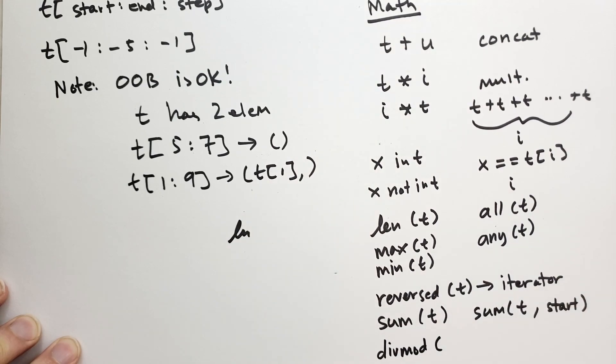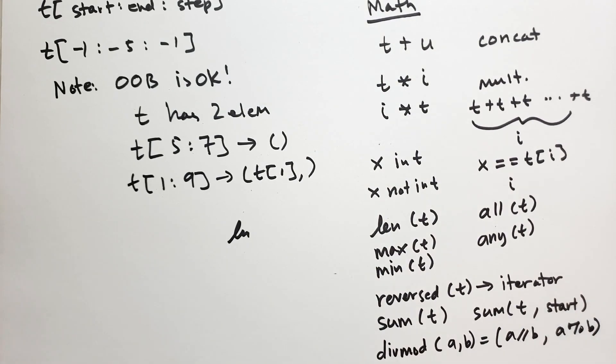One other that I want to mention that is probably weird that you don't see often is divmod. And what divmod takes is you take two numbers, A, B, and it returns a tuple where the first is floor division, A divided by B. And the second element is the modulo. So it gives you the floor division and the remainder at the same time.